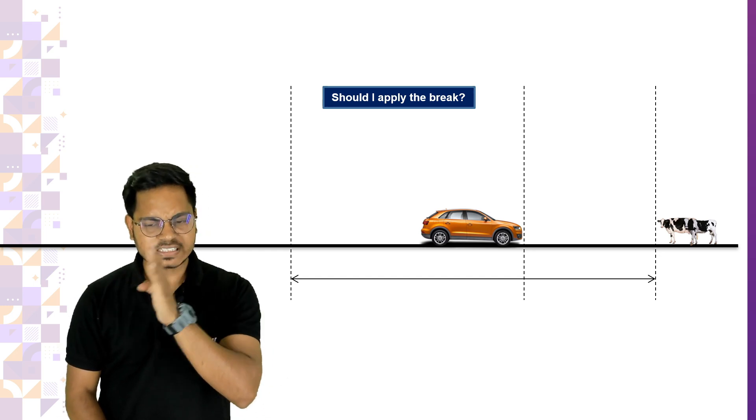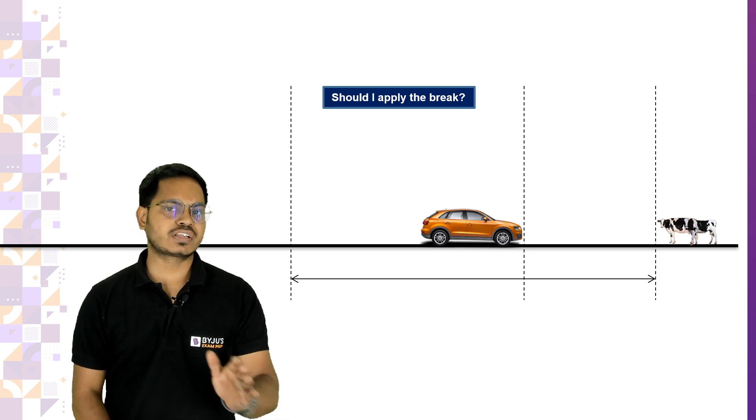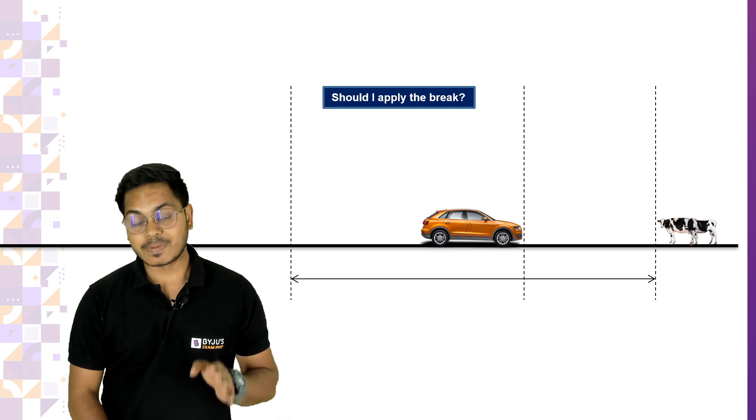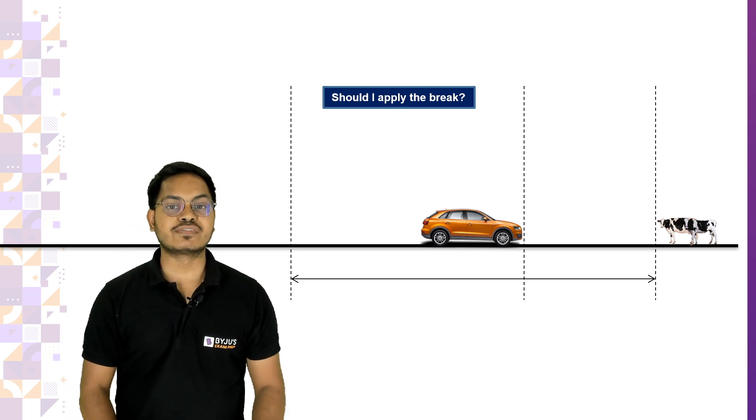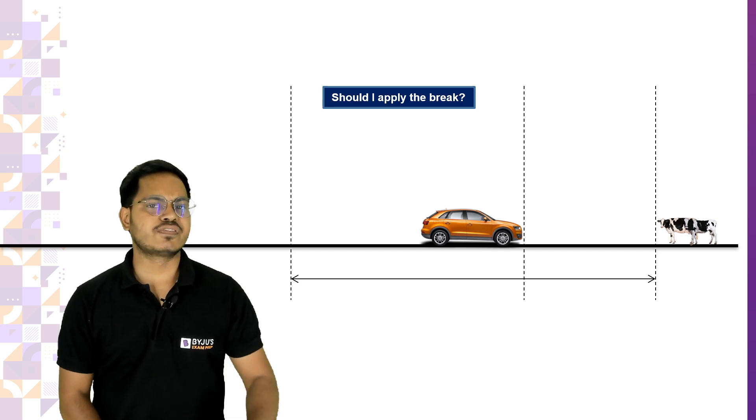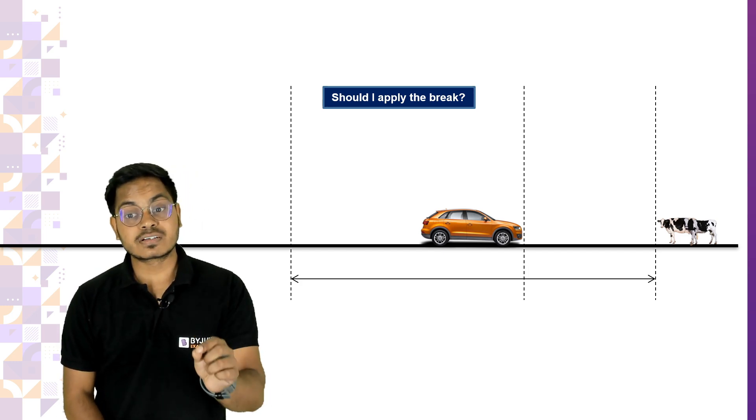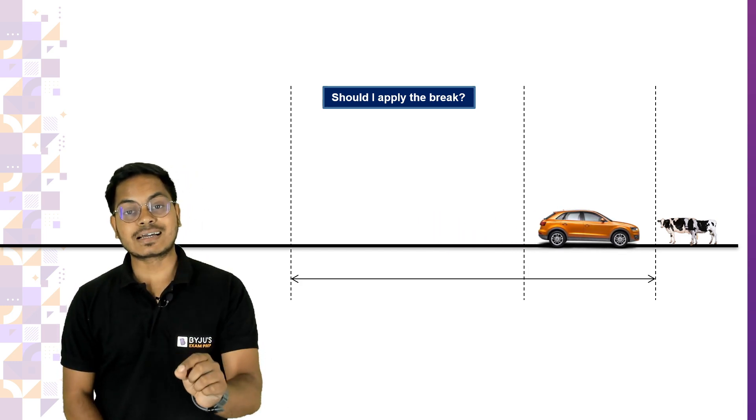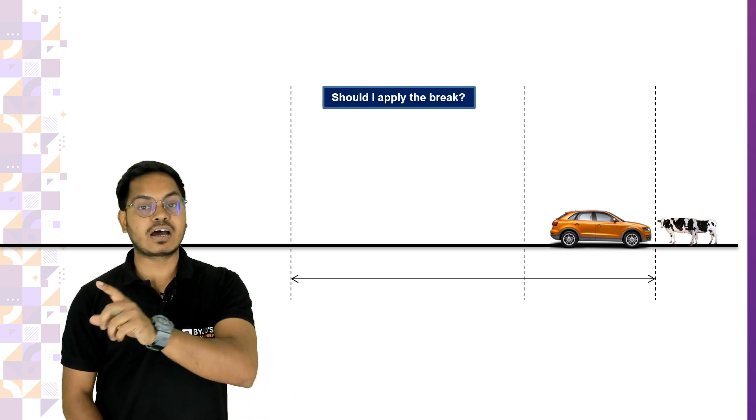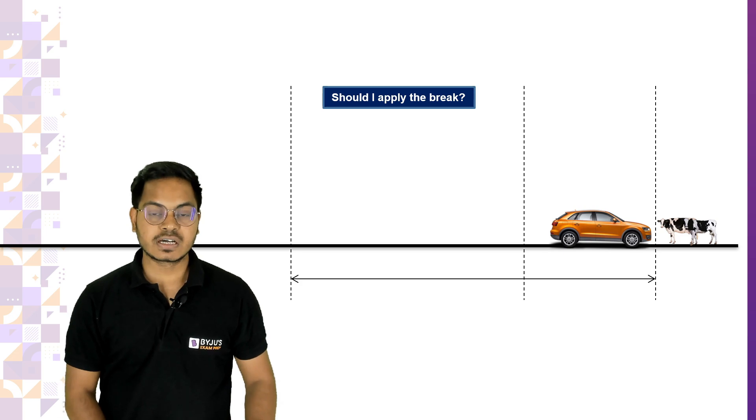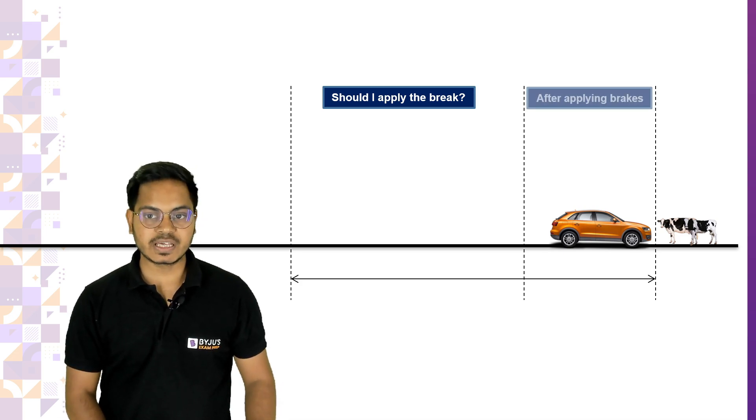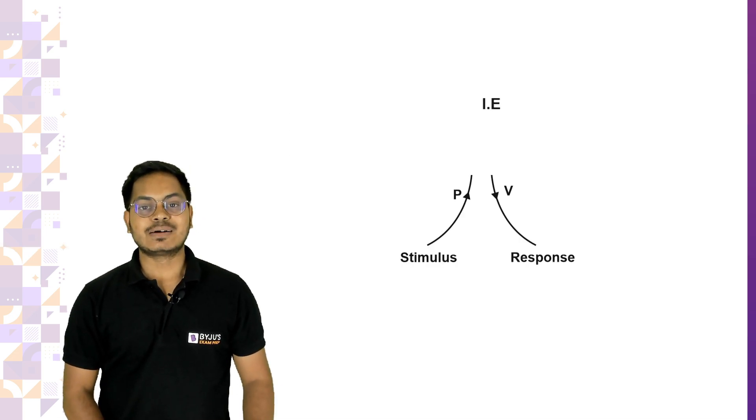At this position where the vehicle is right now, the vehicle applies the brake. The vehicle will not stop exactly at that position. It will cover certain distance before it comes to rest even after applying the brake. The distance the vehicle has covered after application of brake is called the braking distance.